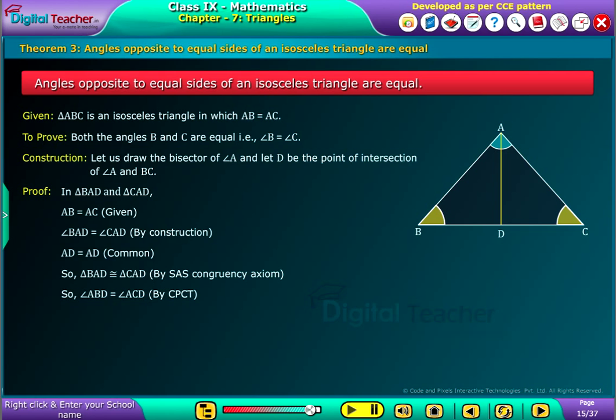So, angle ABD is equal to angle ACD by CPCT. That is, angle B is equal to angle C.